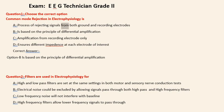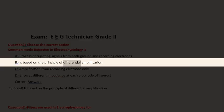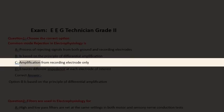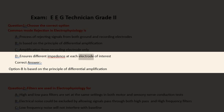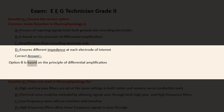A. Process of rejecting signals from both ground and recording electrodes. B. Is based on the principle of differential amplification. C. Amplification from recording electrode only. D. Ensures different impedance at each electrode of interest. Correct answer: Option B is based on the principle of differential amplification.